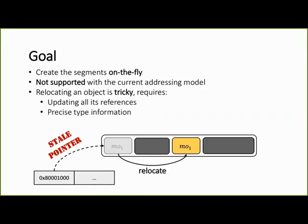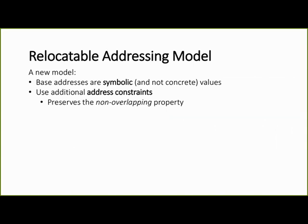Our goal is to create the segments on the fly. The problem is that it's currently not supported with the addressing model. If we want to relocate an object to another address, then we need to update all its references in the memory, which requires precise type information which is not always available. We propose a new model where the base addresses are symbolic values instead of concrete values, and we maintain an additional set of address constraints, which help to preserve the non-overlapping property of the address space.